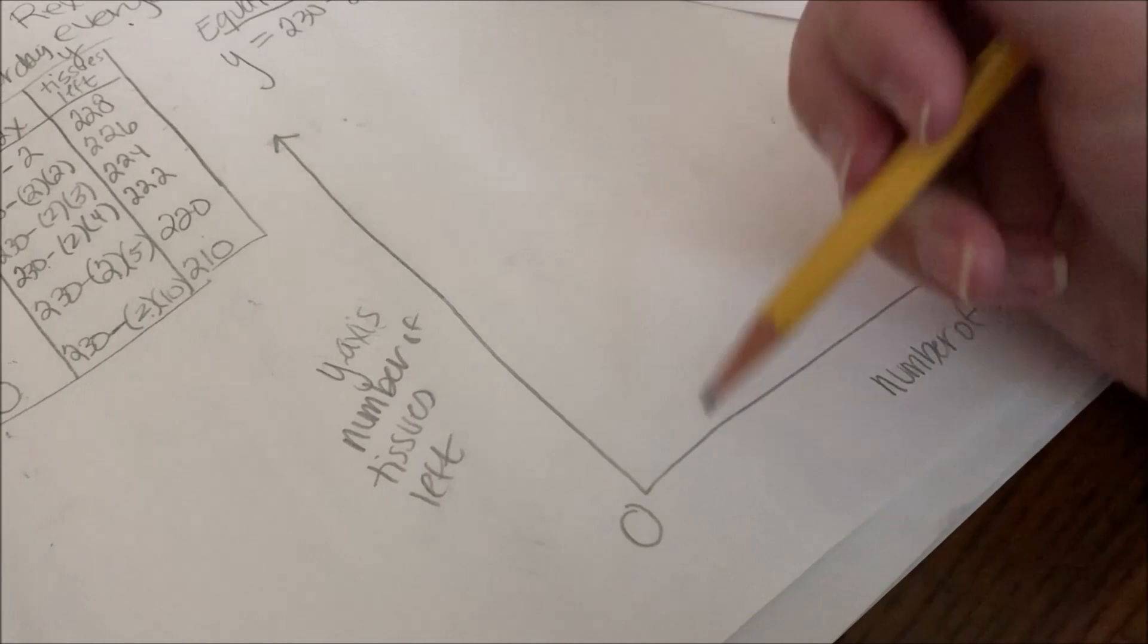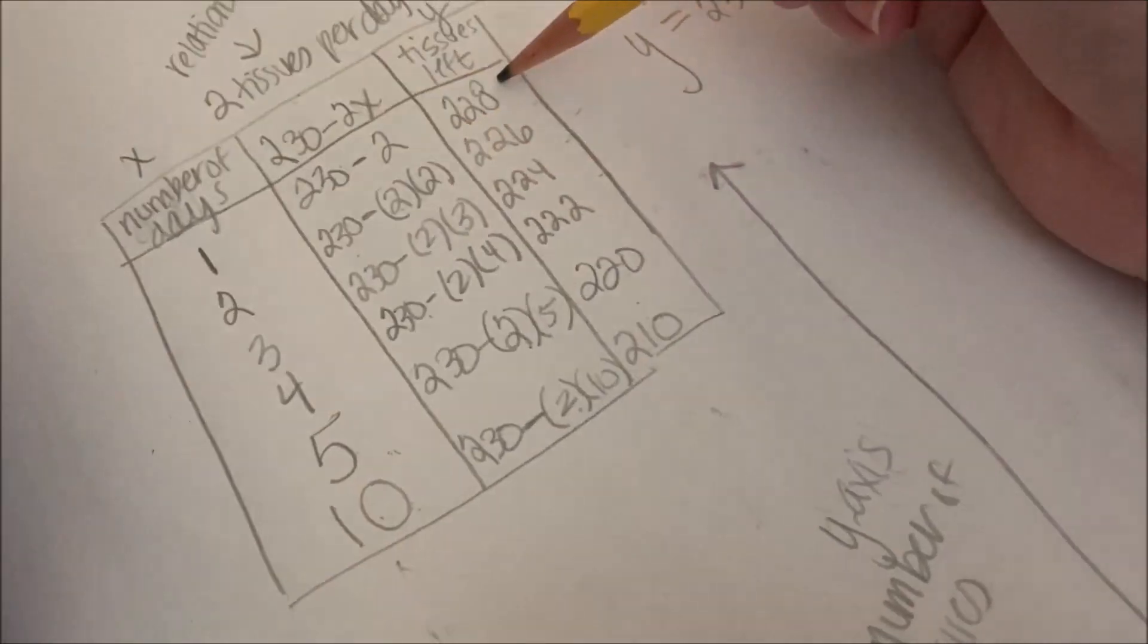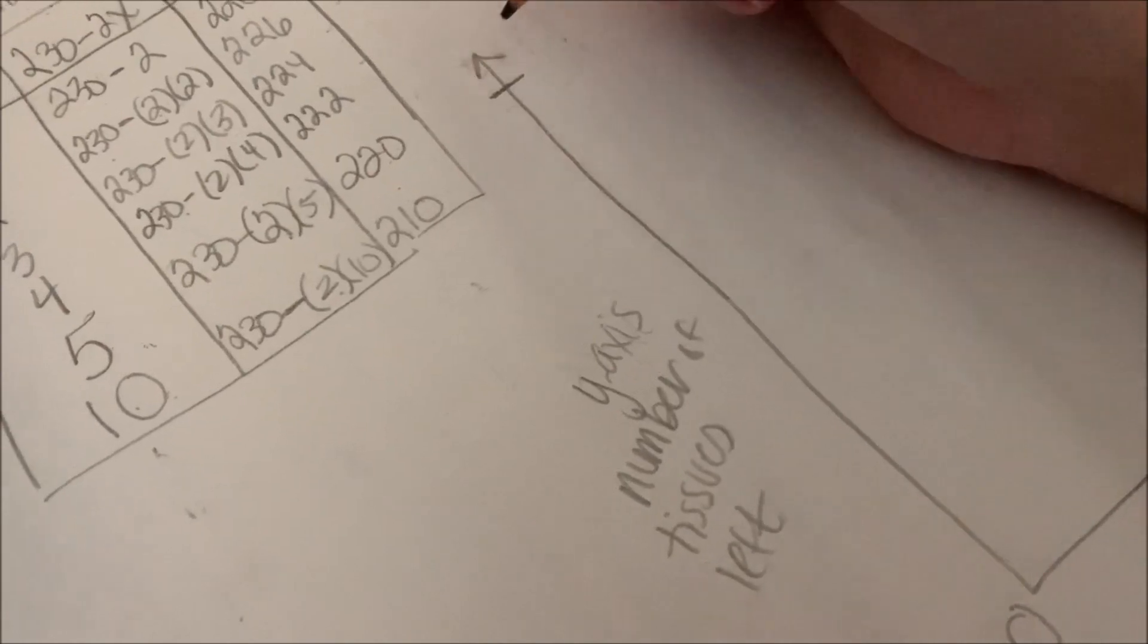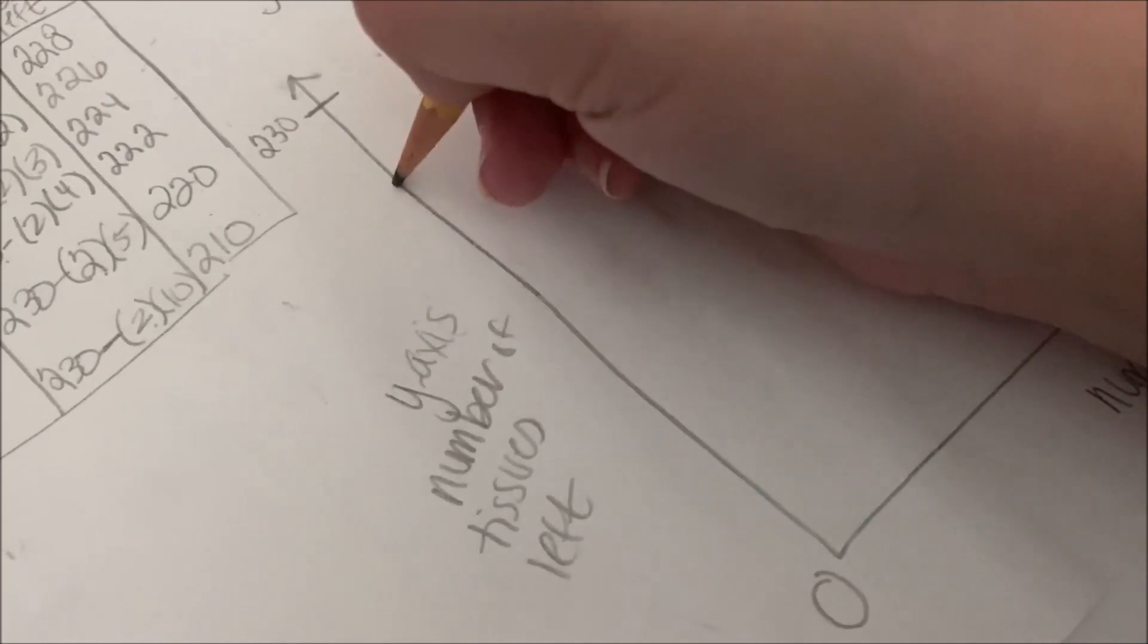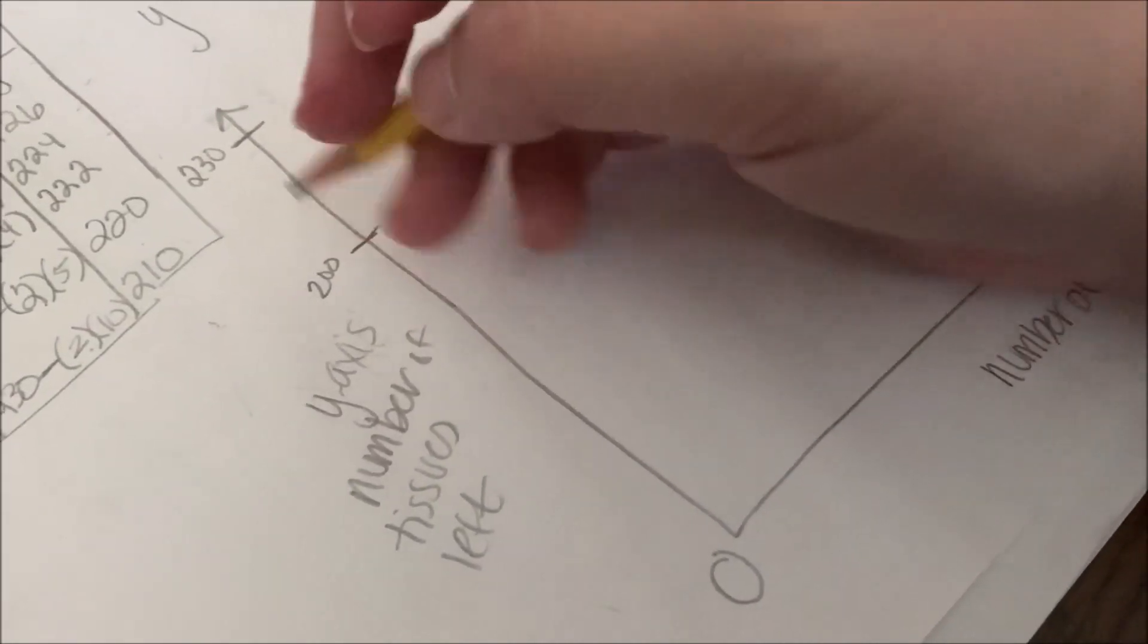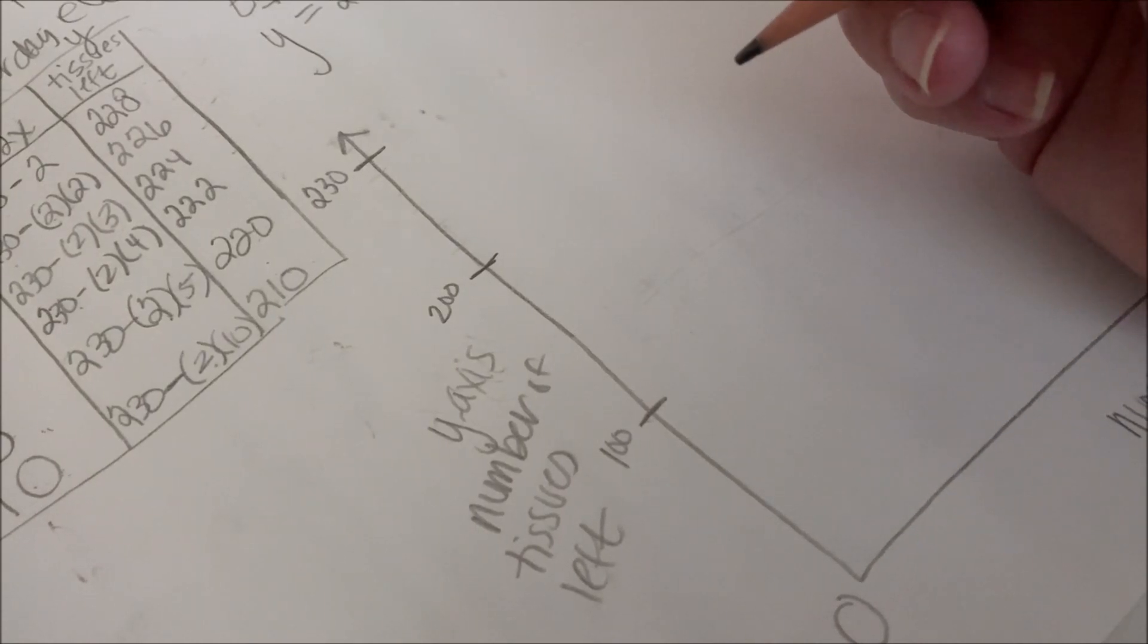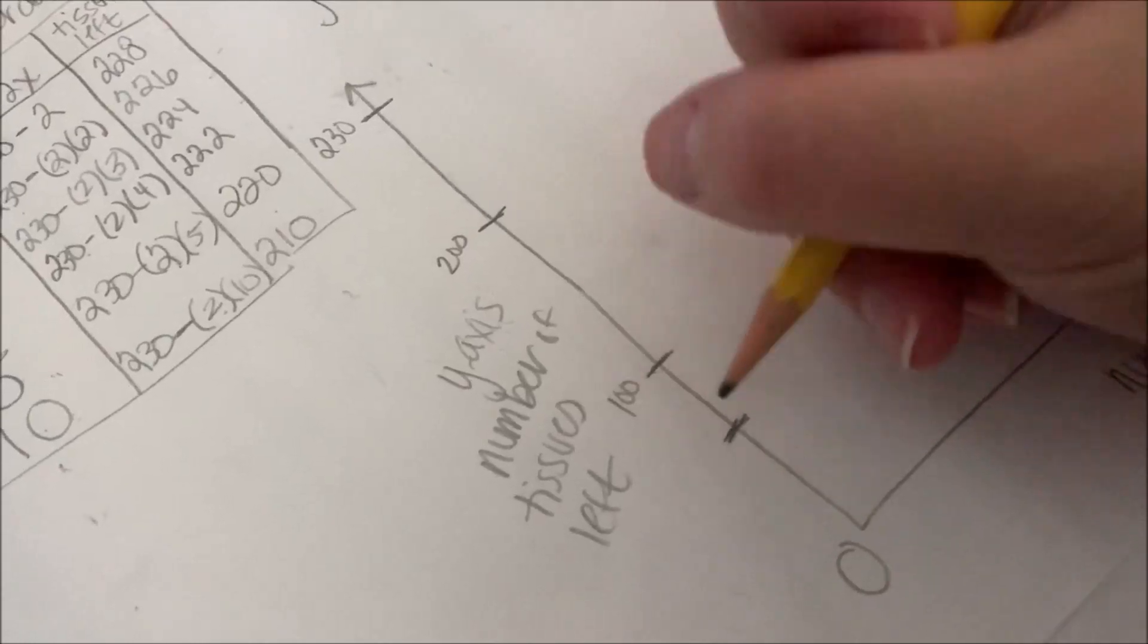So now I need to think about how am I going to number my axes. My highest number of tissues left is this 230. That would be the highest. So let me put that up here at the top. So I'm going to say this is maybe here is 200. Would that be okay? And then maybe here is 100. That might not be exactly even. Let me think about it. Here would be 50.